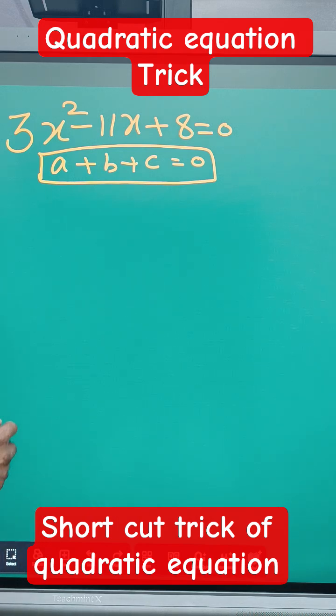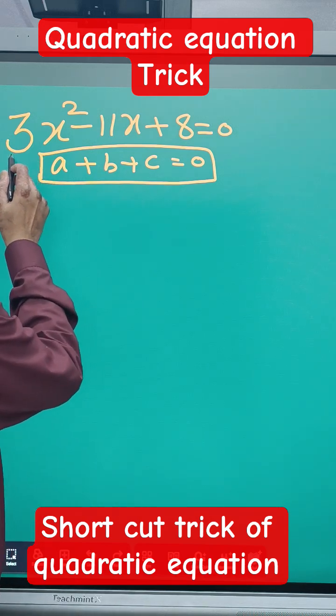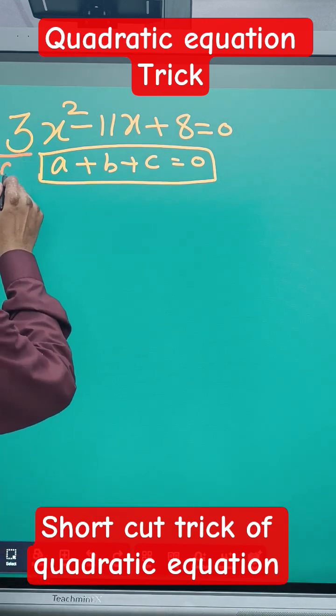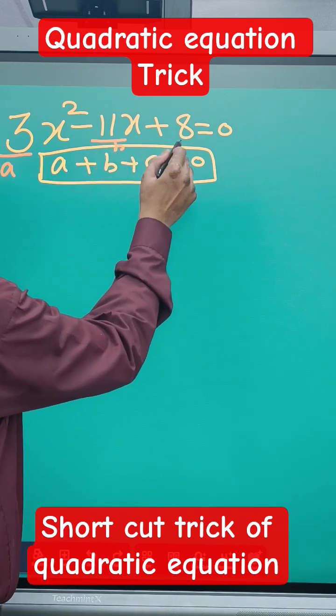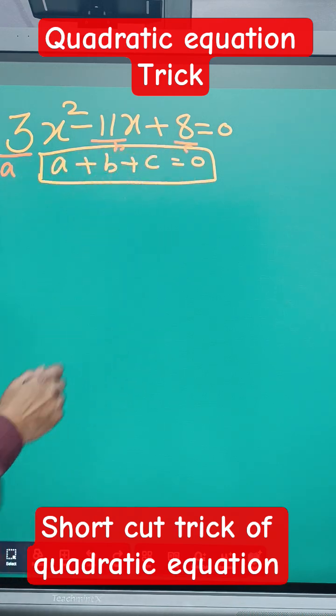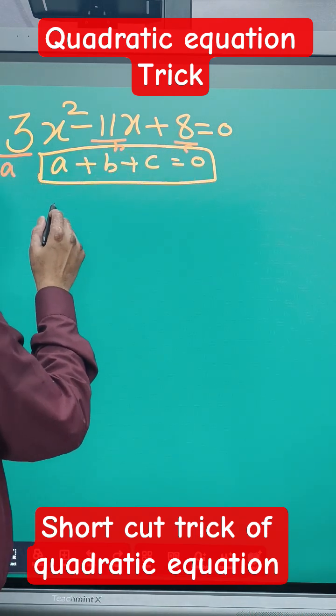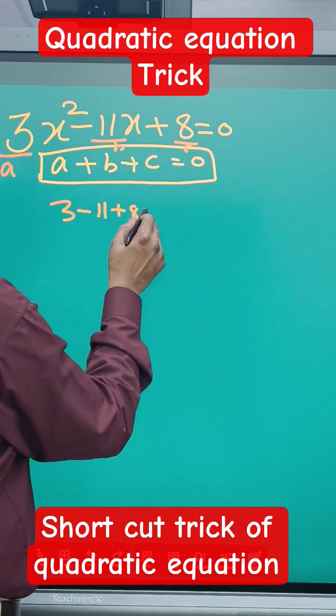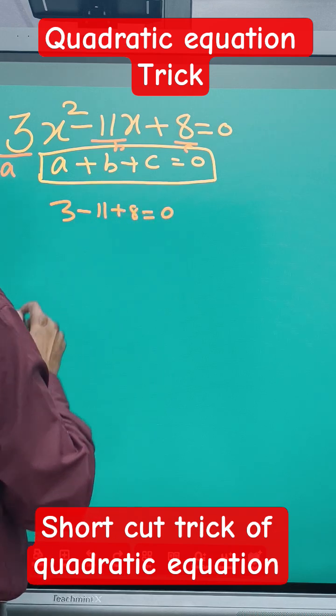But there's a rule here. This is called a, this is b, and this is c. Whenever the sum of a, b, and c equals zero - in this case 3 - 11 + 8, which is 8 + 3 = 11, minus 11 equals zero.